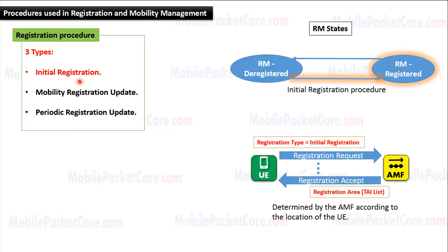The Initial Registration Procedure is used to move the UE from RM Deregistered State to RM Registered State. In this procedure, the UE sends a registration request to the AMF, including registration type equals to initial registration. At the end of the procedure, the AMF sends a registration accept message to the UE.